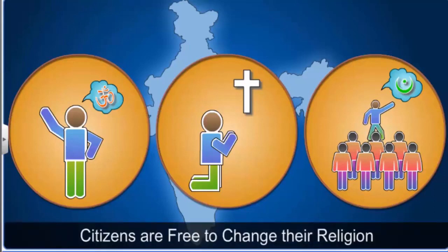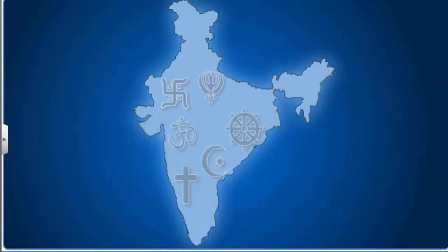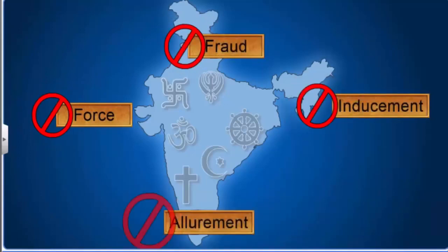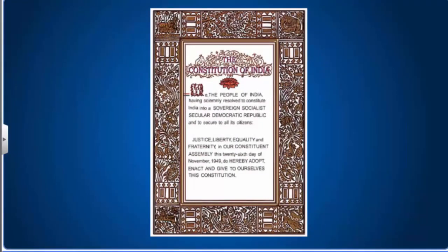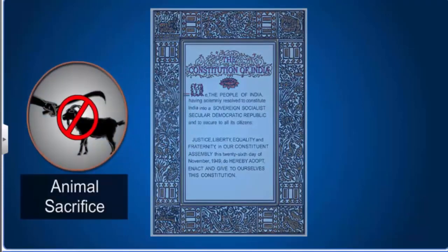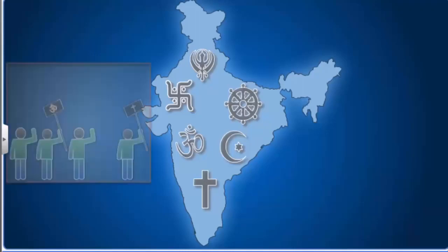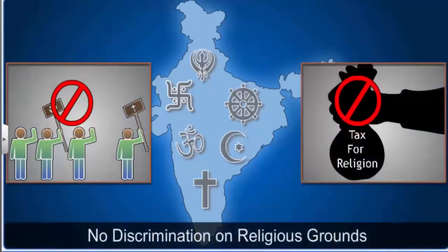However, no one can compel another person to convert into a religion by means of force, fraud, inducement, or allurement. The Indian constitution bans ill-treatment in the name of religion and religious practices, such as the sacrifice of animals or forcing a widow to shave her head and dress in white. The right also prohibits the government from discriminating on the basis of religion or forcing people to pay taxes for the promotion or maintenance of any particular religion or religious institution.